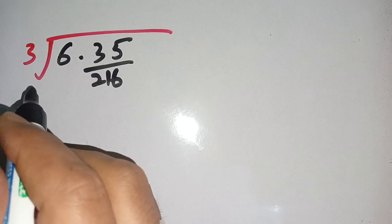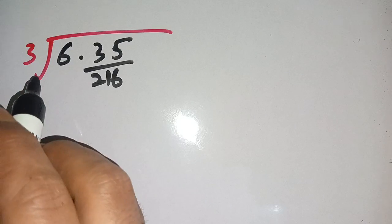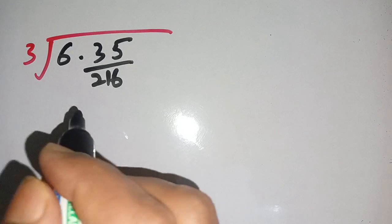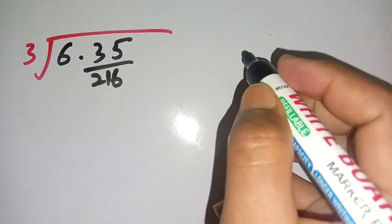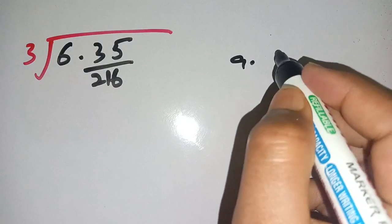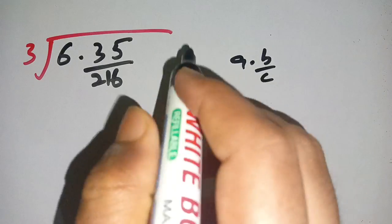Hello everyone, in today's class we are going to solve this radical problem: cube root of 6 times 35 divided by 216. Before solving this, we know that this improper fraction, if a times b divided by c, then it is equal to a times c plus b divided by c.